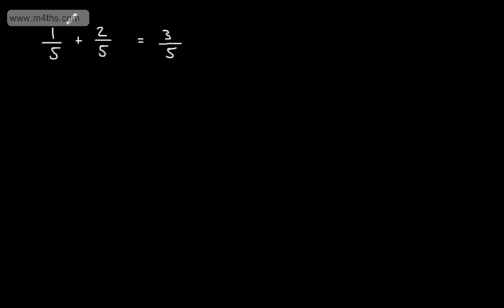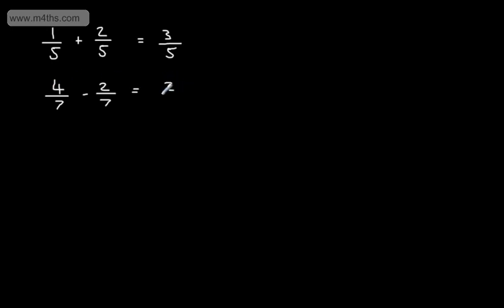If you like to think of this as a pizza, and it's split into 5 slices, if I have 1 slice and add it to 2 slices, I'm going to have 3 of the 5 slices. Let's have a look at subtracting fractions. If I have 4 over 7 and I want to subtract from this 2 over 7, we can see that the denominators are the same — they're both 7. So all I need to do is take 2 from 4. So 4 minus 2 is going to give me 2, and we end up with 2 over 7.